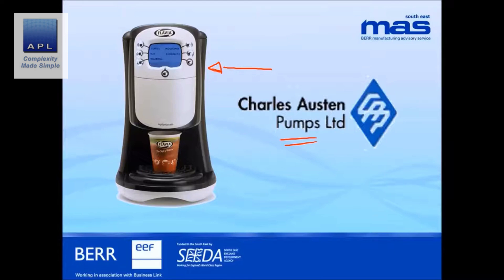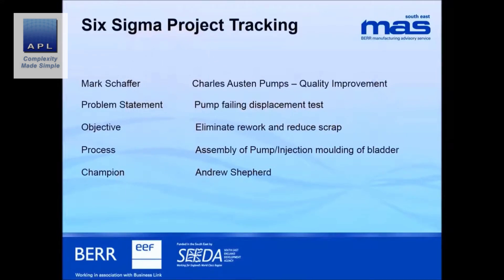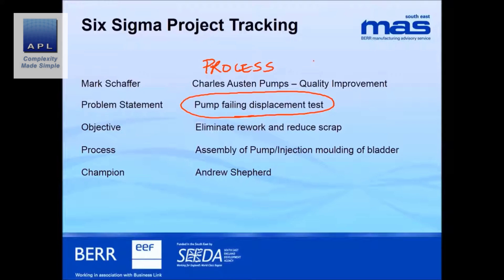Here's the finished item — it's actually a pump made by Charles Austin Pumps. The pump goes into coffee machines you've seen in conference centers. Here's the problem: the pump is failing the displacement test. We have to answer this question — is it the assembly process causing the problem, or is it the parts? Unless we can answer that question, we will go to the wrong place to look for answers.